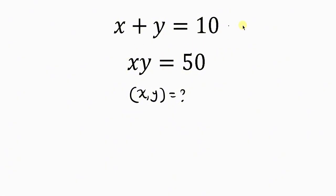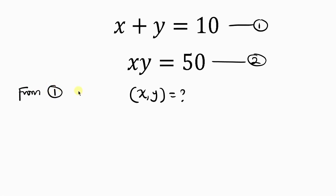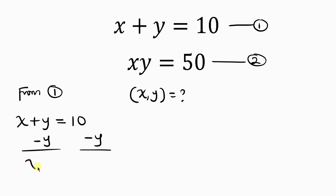Since we have two equations here, we can call the first one equation 1 and the second one equation 2. Our first step will be to choose from equation 1 and make x the subject by moving y to the right-hand side. We subtract y from both sides, so x equals 10 minus y. We can call this equation 3.